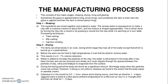Shaping is done by forcing the clay into a mold or by pressing a mold into the clay, while spinning on a turntable. The processing techniques used for shaping are: tape casting, slip casting, and injection molding. These three processes are normally used for the shaping stage.